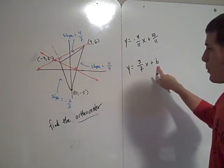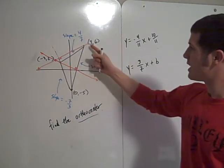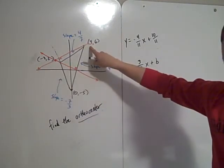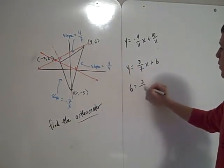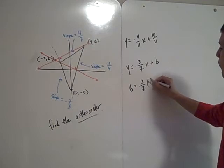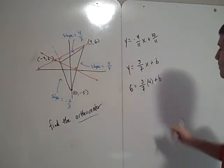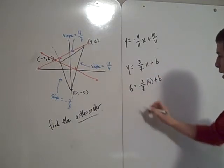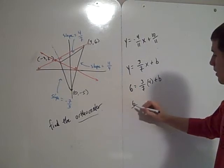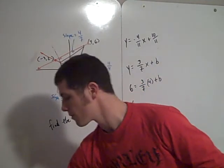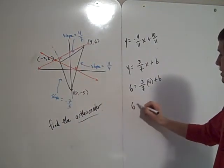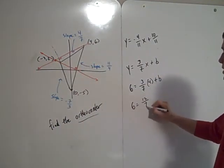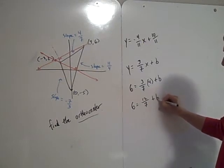So the slope of this is 3 over 7. So you have y equals positive 3 over 7x plus B. We don't know what B is, but we can find B because we know that this line contains the point 4, 6. So you have 6 equals 3 over 7 times 4 plus B. 3 times 4 is 12.